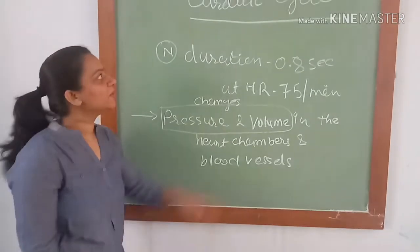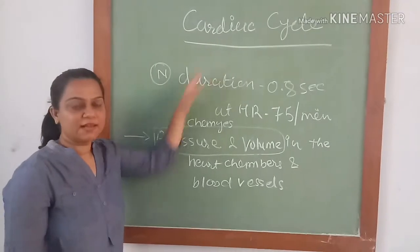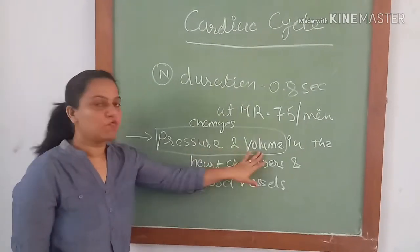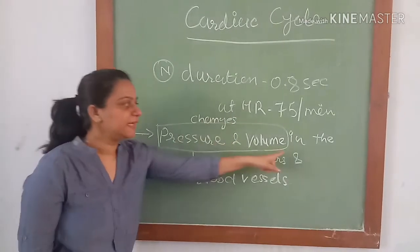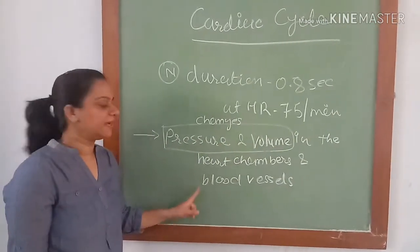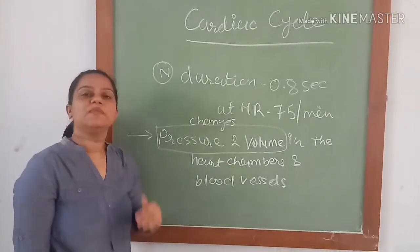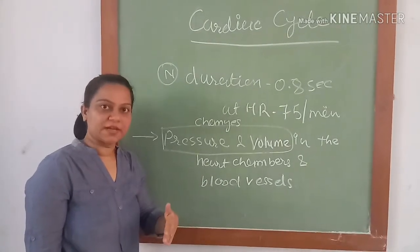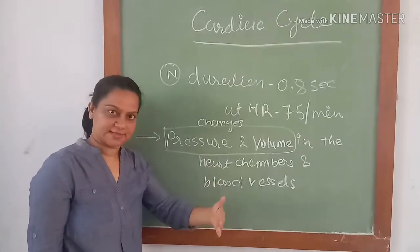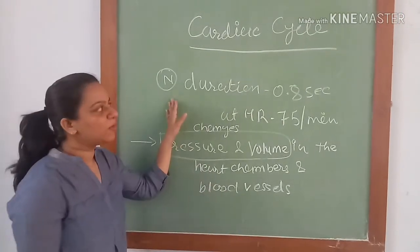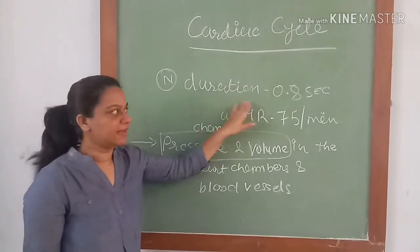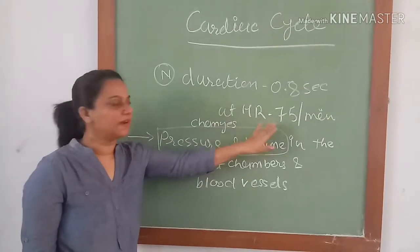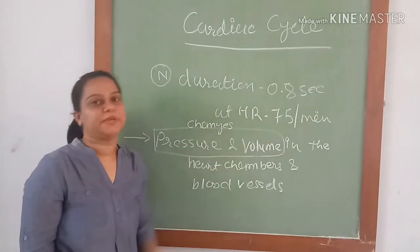Hello everyone, today I am going to discuss about cardiac cycle. Cardiac cycle is defined as pressure and volume changes in the heart chambers and blood vessels between two subsequent cardiac contractions, meaning from the beginning of one cardiac contraction to the beginning of the next. Normal duration of cardiac cycle is about 0.8 second when we consider heart rate at around 75 beats per minute.